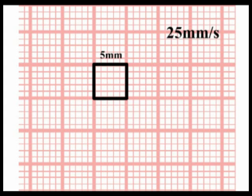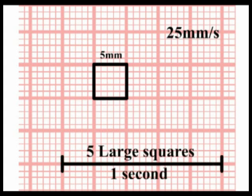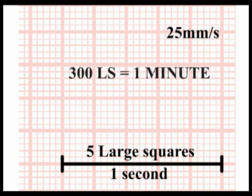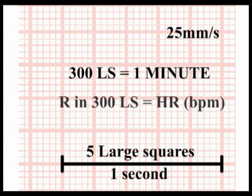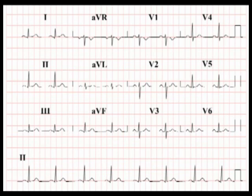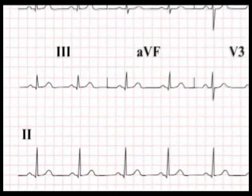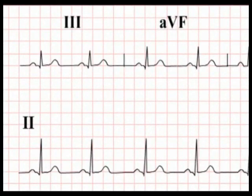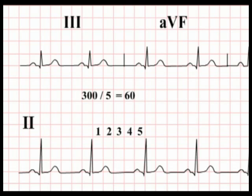At a recording speed of 25 mm per second, 5 large squares are covered in 1 second, so 300 large squares represents 1 minute. Therefore the number of R waves in 300 large squares is the heart rate in beats per minute. Looking at the rhythm strip on this ECG, there is 1 R wave present to every 5 large squares, so in 300 large squares there will be 60 R waves — a heart rate of 60 beats per minute.